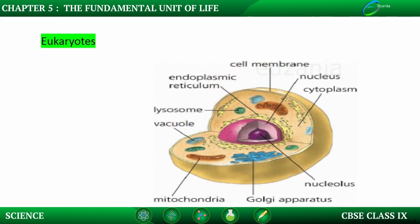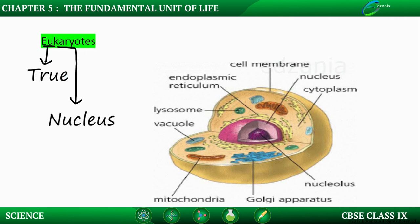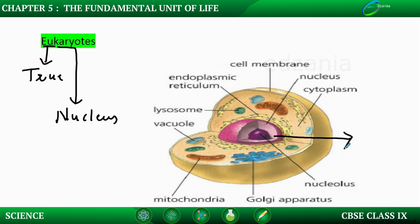In eukaryotic cells, 'eu' means true and 'karyon' means nucleus. The basic structure of a eukaryotic cell contains a nucleus and many specialized organelles inside the cytoplasm, which is why eukaryotic cells are called complex cells. All these specialized organelles will be discussed in the next topic on plant cell versus animal cell.